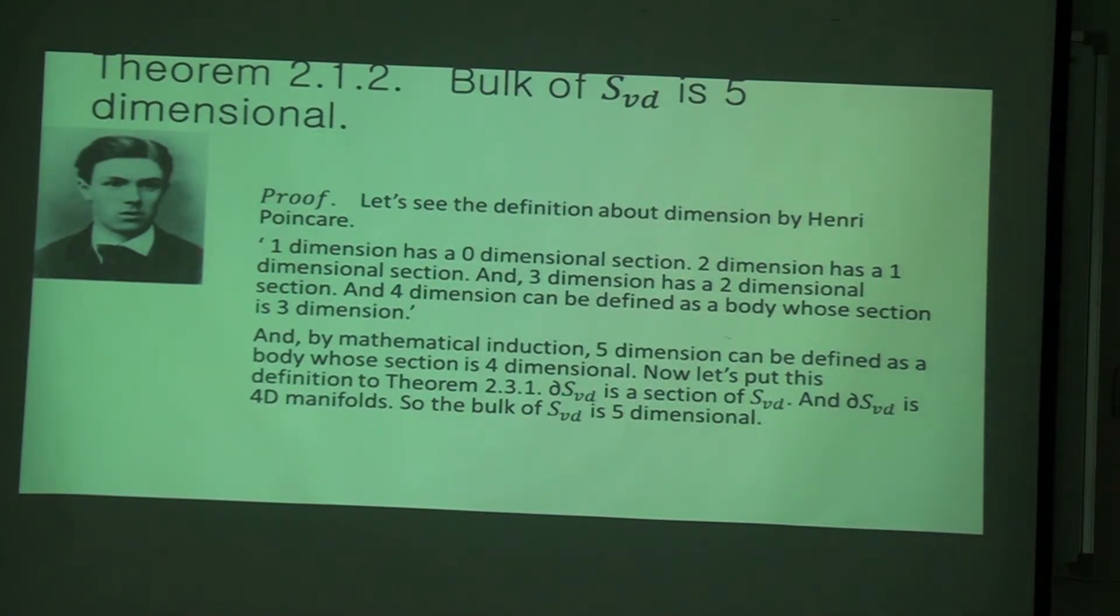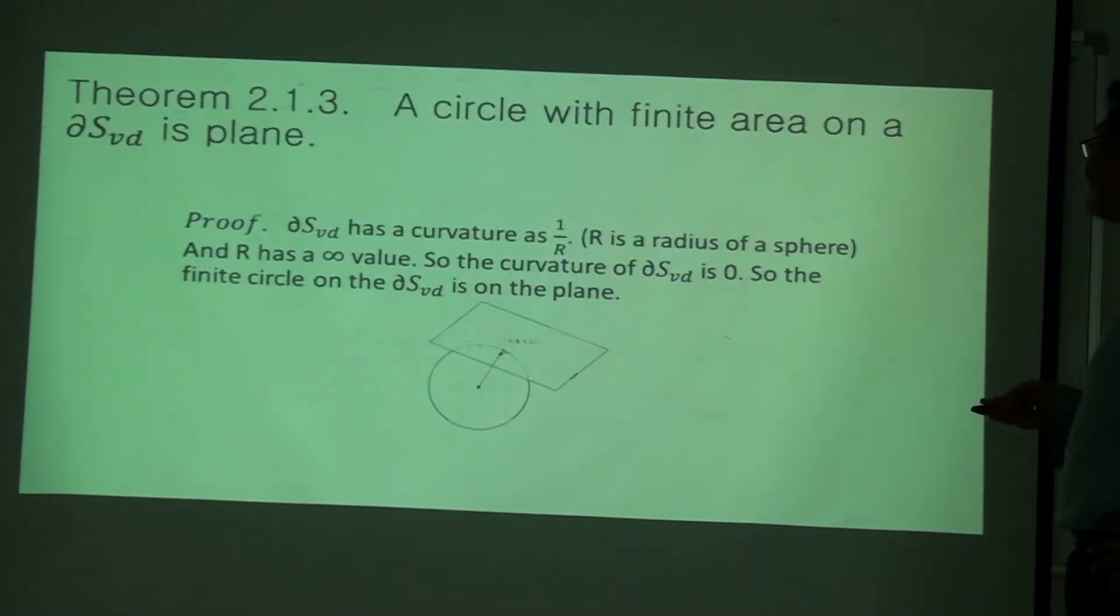Within this proof, I can prove that S3 should be a flat boundary. This is because I clarified the definition of dimension. The ∂S3_vd, the boundary of sphere with volume divergence, should have curvature as zero. Because if R value is very big, close to infinity, it is infinity. So the curvature is zero, and this is why it has a plane.